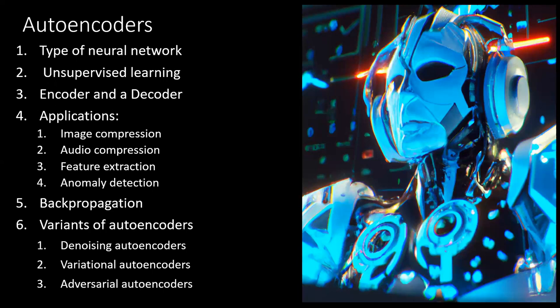Autoencoders are a type of neural network used for unsupervised learning, meaning they can learn patterns in data without the need for explicit labels or supervision. They consist of two main parts: the encoder and the decoder. The encoder compresses the input data into a low-dimensional representation, while the decoder reconstructs the original data from the compressed representation. Autoencoders are commonly used for data compression, dimensionality reduction, image and signal processing tasks such as denoising and image generation.